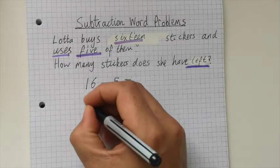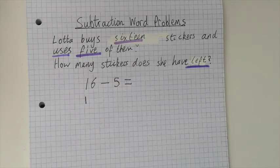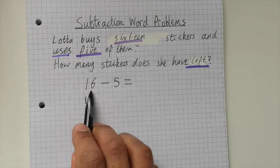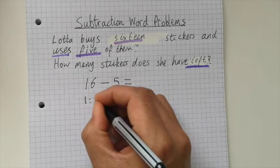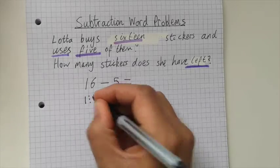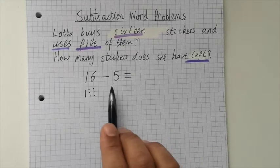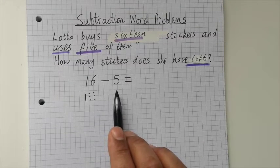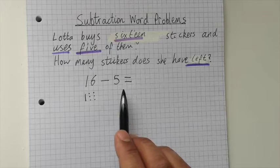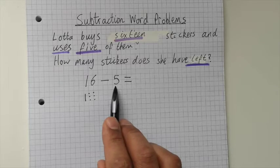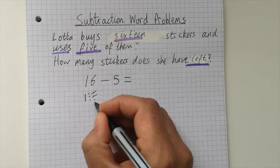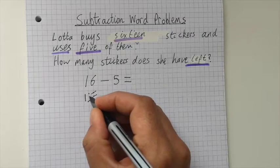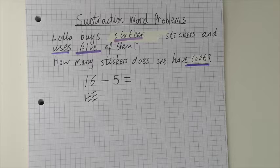So I'm going to draw my tens - I've got one lot of ten - and I'm going to draw my ones. I've got six lots of one. That's right: one, two, three, four, five, six. Now because it's subtraction, we don't need to draw this number, do we? Because that is what we're taking away. So now we can take away our five lots of one: one, two, three, four, five. So I've crossed out my five ones.